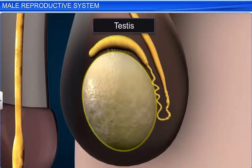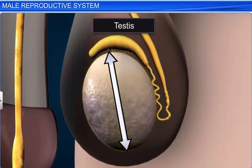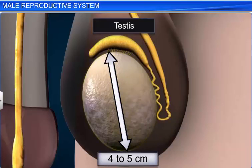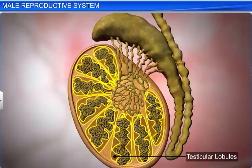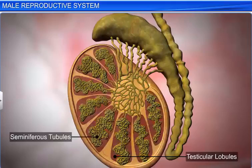The testes are oval in shape, with a length of about 4 to 5 centimeters and a width of about 2 to 3 centimeters. The testes are surrounded by a tough connective tissue capsule called the tunica albuginea. Each testis has 250 compartments called testicular lobules. Each lobule in turn contains 1 to 3 highly coiled seminiferous tubules.